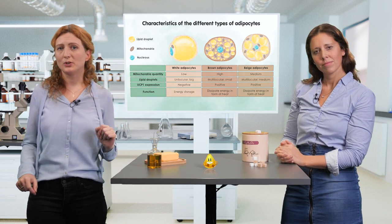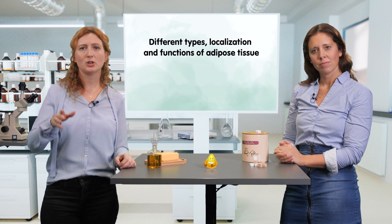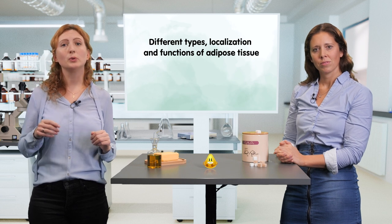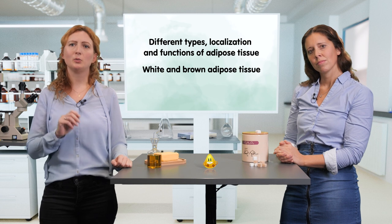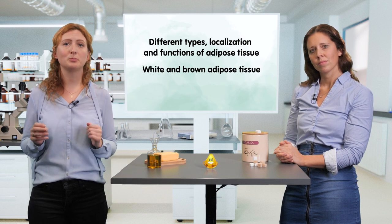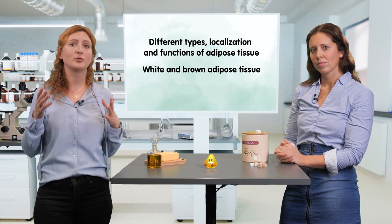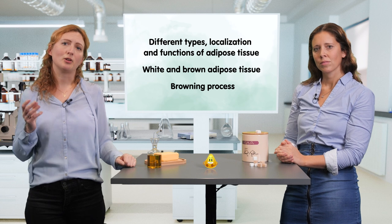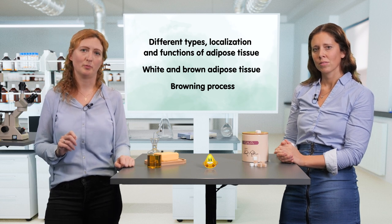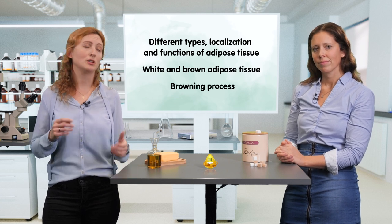So we've reached the end of this first video. Summing up, in this video we introduced the different types, localization, and functions of adipose tissue, including the white and brown adipose tissue. Additionally, we characterized white and brown adipocytes. And lastly, we introduced you to the importance of the so-called browning process as a potential therapeutic strategy to fight against metabolic syndrome. But now, let's move on to look into white adipose tissue a bit closer.